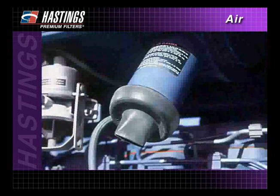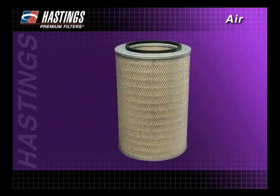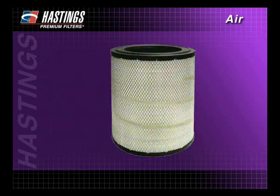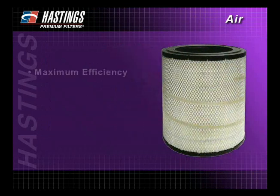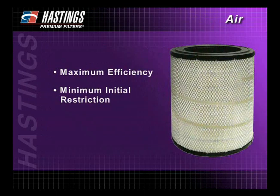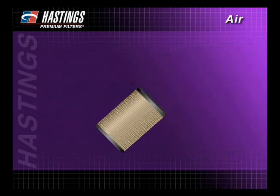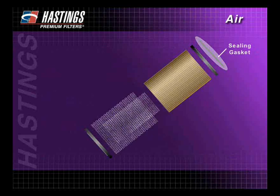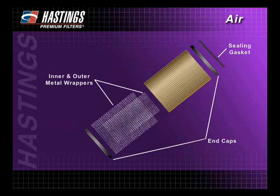While pre-cleaners are very helpful in air filtration, they can't trap all of the dirt. That brings us to the heart of the air filtration system, the filter element itself. Every Hastings air filter is designed to have an efficient balance of three important characteristics: maximum efficiency, minimum initial restriction, and cost-effective service life. The primary components of a typical air filter element are the sealing gasket, the end caps or molded ends, the inner and outer metal wrappers, and the media.